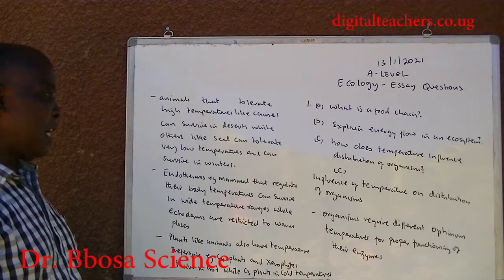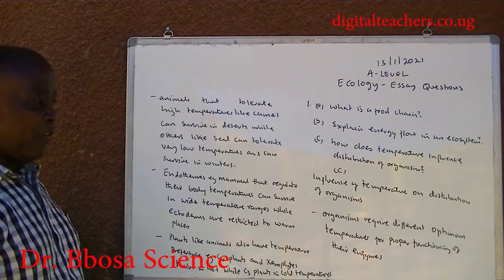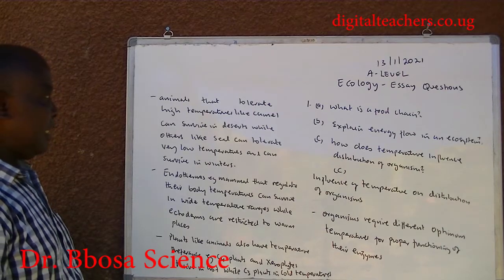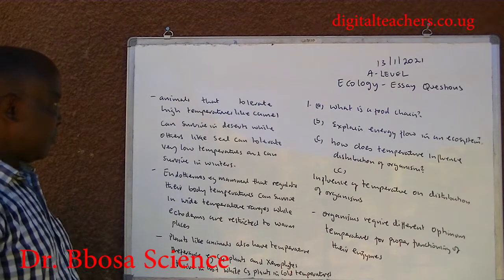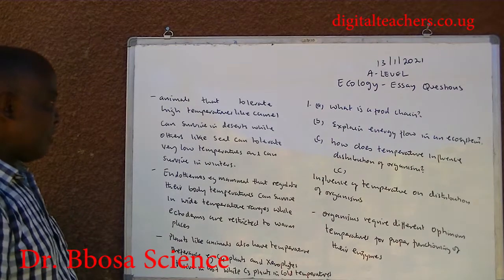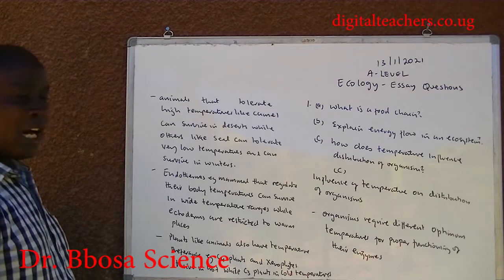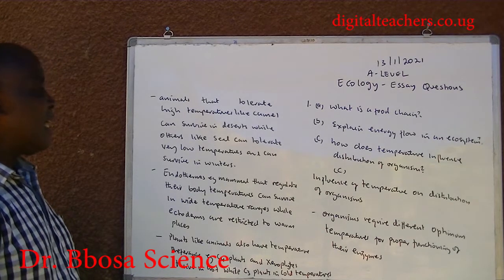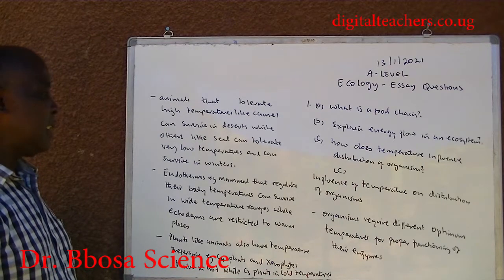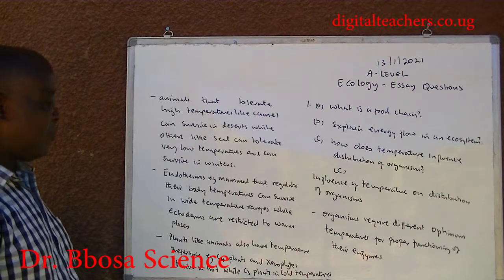C. Influence of temperature on distribution of organisms. Organisms require different optimum temperatures for proper functioning of their enzymes and therefore their survival. Animals that tolerate high temperatures, like camel, can survive in deserts. While others, like seals, can tolerate very low temperatures and can survive in winters. Endotherms, for example mammals, that regulate their body temperatures can survive in wide temperature ranges.